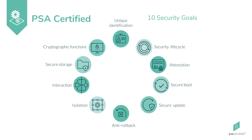In conclusion, the 10 core security goals discussed in this module are embodied in the PSA Certified specifications, designed to help you develop and deploy secure products. It is strongly recommended that all features are implemented; however, the features supported are determined by, for example, the intended application domain and cost, by any applicable national standards, by ecosystem operators, and by any certification scheme.